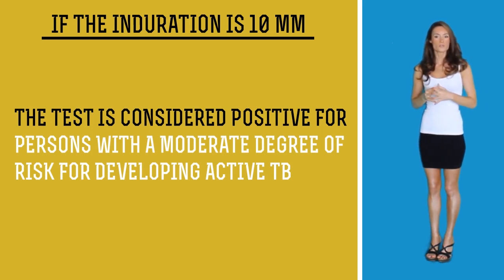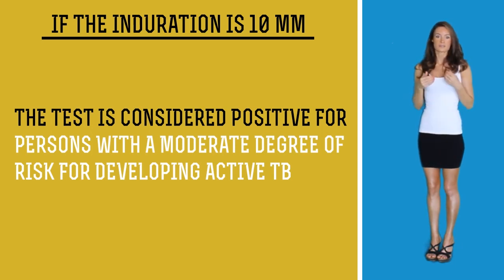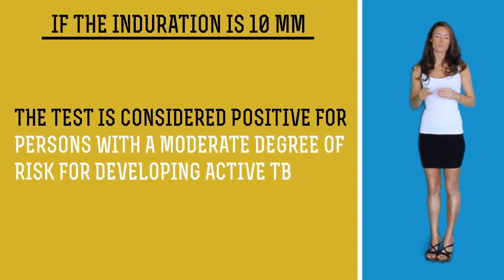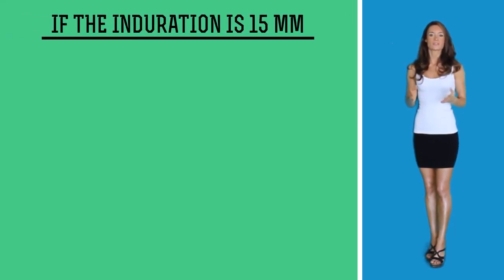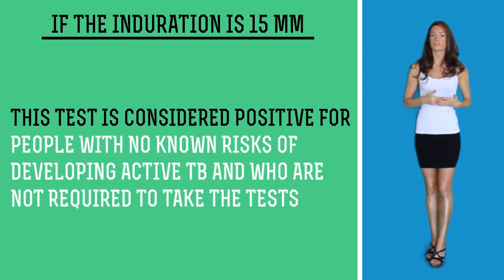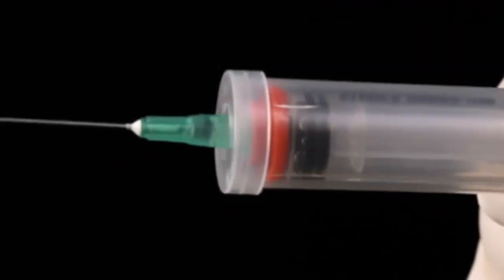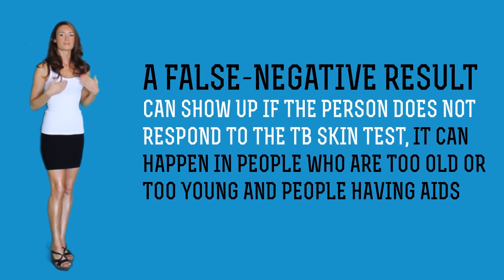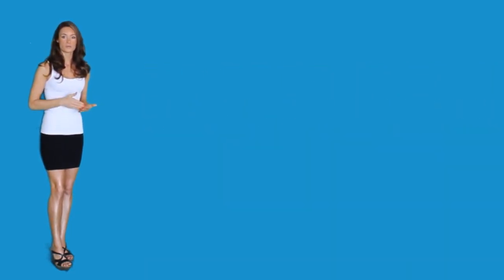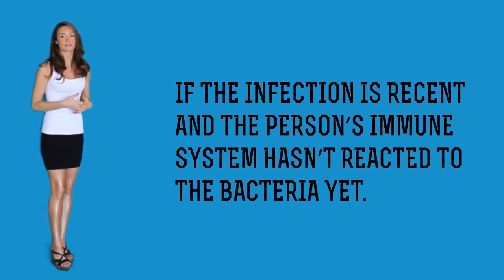Also included in the 10 mm category: people who use injectable drugs, those who have undergone jejunal bypass surgery or gastrectomy, and persons with certain medical conditions such as diabetes, silicosis — a lung disease caused by breathing dust containing crystalline silica — neck or head cancer, and renal insufficiency. If the induration is 15 mm, the test is considered positive for people with no known risk of developing TB. A false positive can show up in individuals who have had the BCG vaccine in the past. A false negative can show up in a person that does not respond to the TB test — in people who are too young, too old, or who have AIDS — or if the infection is recent and the immune system hasn't reacted to the bacteria yet.